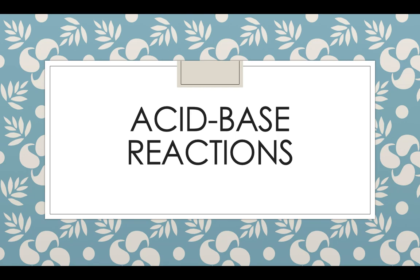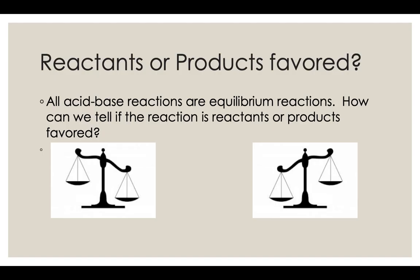Today we're going to start to look at some acid-base reactions. All acid-base reactions are equilibrium reactions, but what we're going to look at first is how can we tell if the reaction is reactants or products favored — in other words, does it have a very small K value or a large K value?